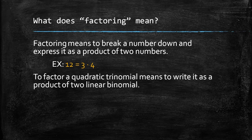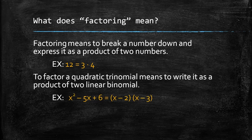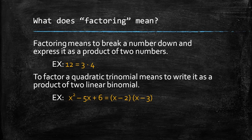To factor a quadratic trinomial means to write it as a product of two linear binomials. For example, x squared minus 5x plus 6 can be factored into x minus 2 times x minus 3.